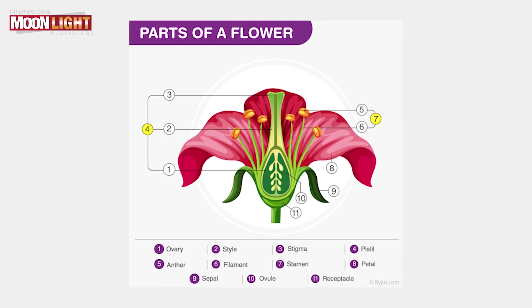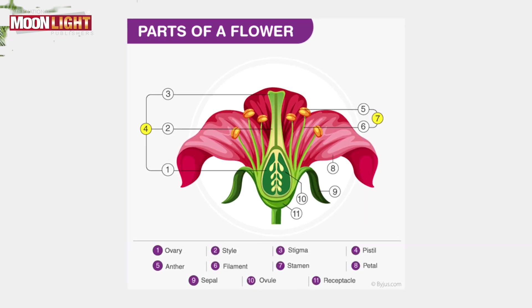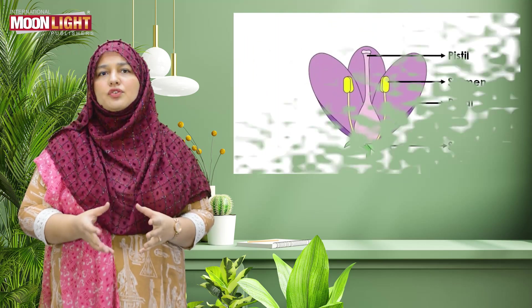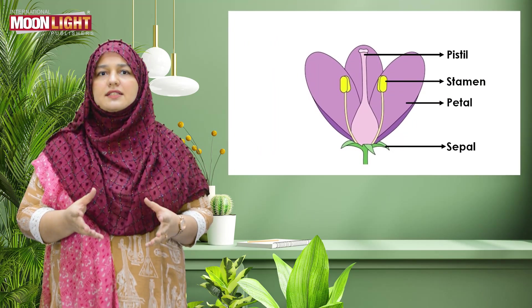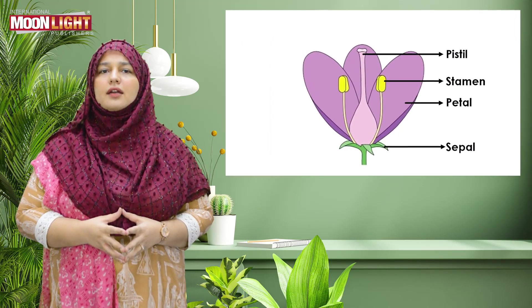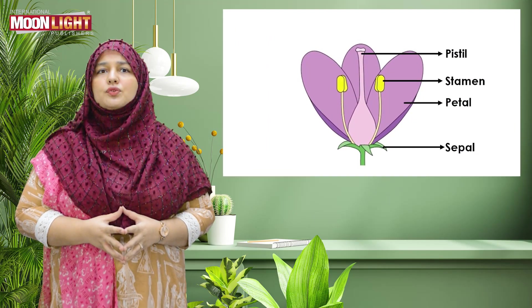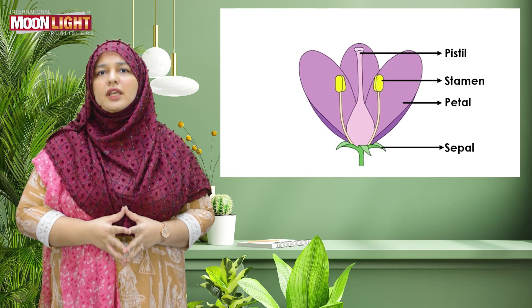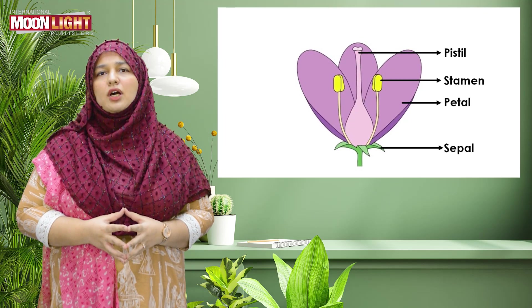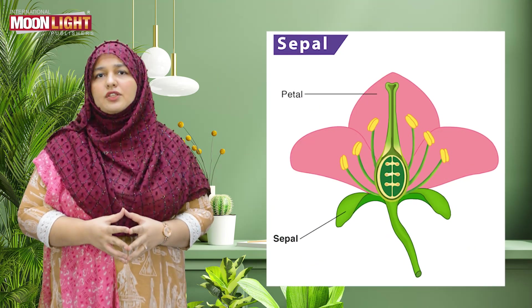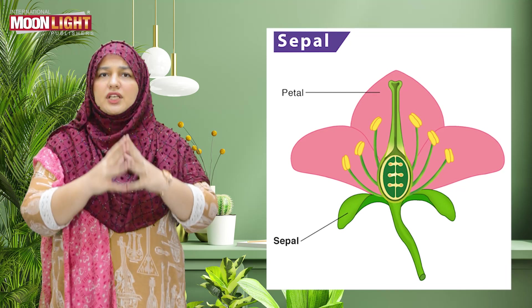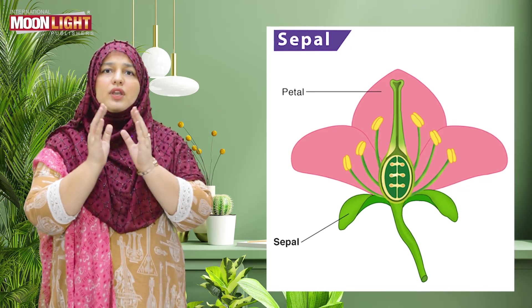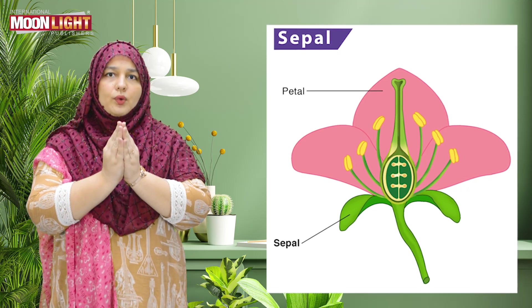Let's study flowers in detail. A flower has four main parts: sepals, petals, stamen, and carpel. Sepals are small, green, leaf-like structures that protect the flower when it is in bud form.